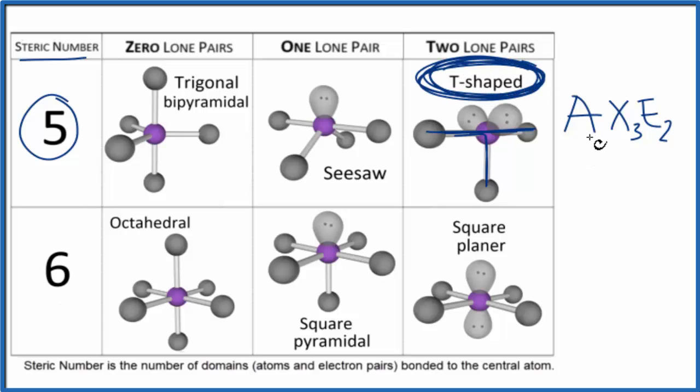For the electron geometry, since we have those five steric groups, it ends up being trigonal bipyramidal. This is Dr. B with the molecular geometry for IBr3. Thanks for watching.